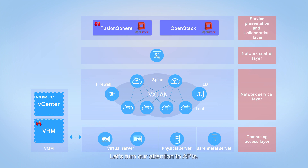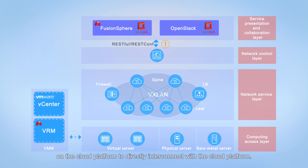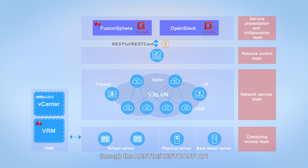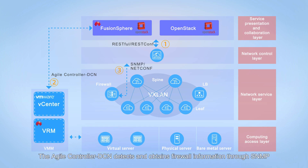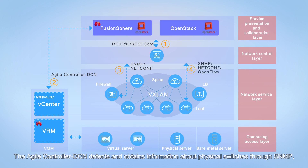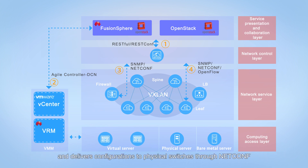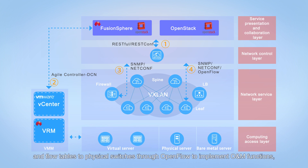The agile controller DCN provides plugins deployed on the cloud platform to directly interconnect with it. It interconnects with the cloud platform through the RESTful/RESTconf API and receives network service instructions sent by the cloud platform. FusionSphere directly interacts with the VMM and traffic does not need to be transmitted through the agile controller DCN. The agile controller DCN detects and obtains firewall information through SNMP and delivers configurations to firewalls through NETCONF. It also detects and obtains information about physical switches through SNMP and delivers flow tables to physical switches through OpenFlow to implement O&M functions such as path detection.